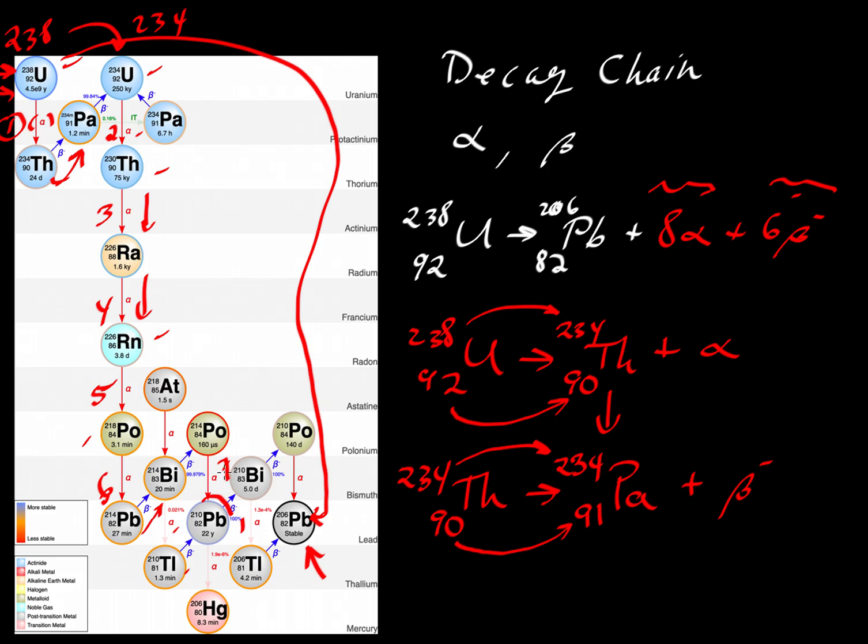We follow this chain. Here's a seventh alpha decay to get to lead. That'll go through beta decay to get to polonium. And then an eighth decay will get us to lead. So we just followed one of those paths.